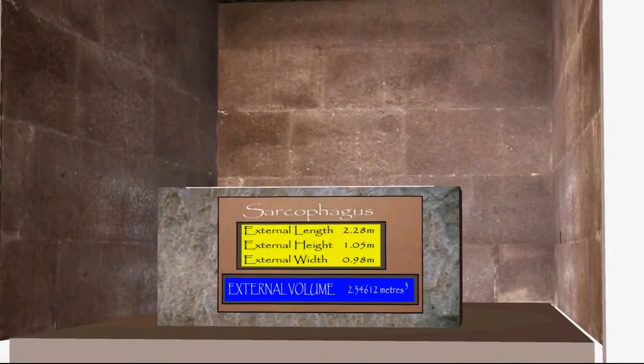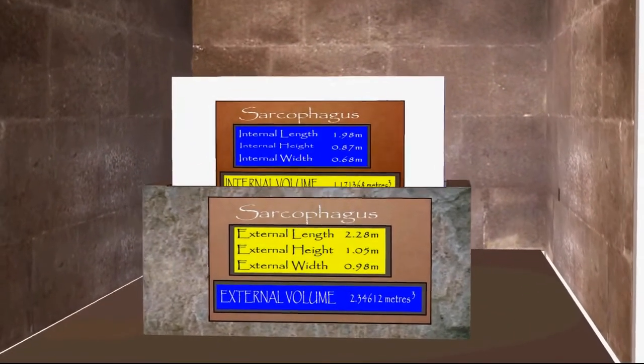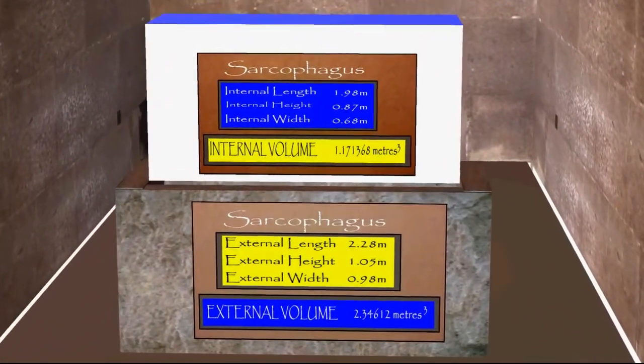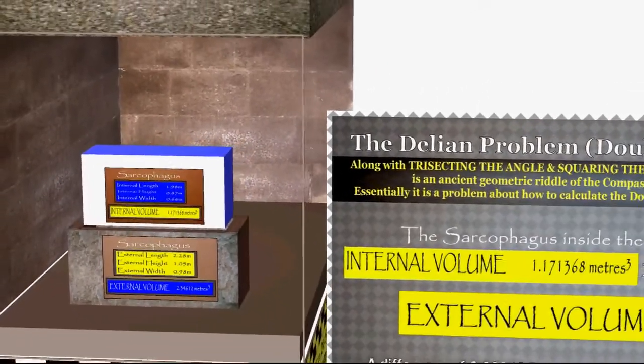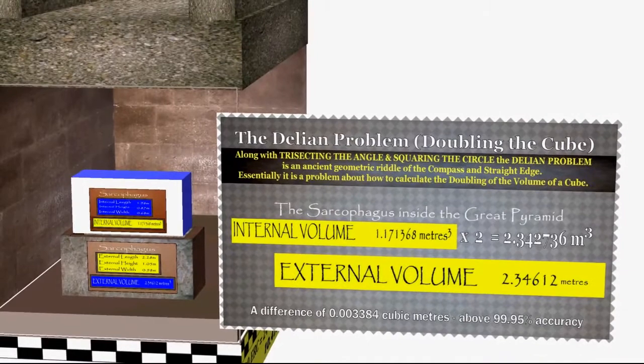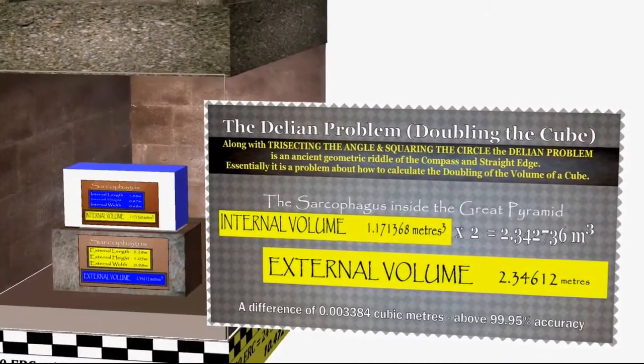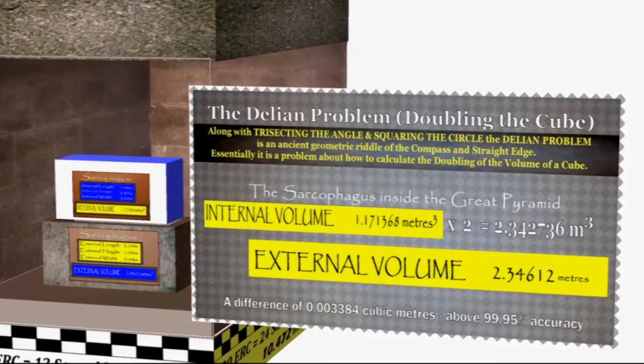We have a rectangular sarcophagus, but it doesn't have to be a cube, because the same issue is about doubling the volume. And the exterior volume of the sarcophagus is double that of the interior volume of the sarcophagus. So this, as with all the other coincidences of beautiful maths, phi, pi, metrology that's built into the Great Pyramid, is this not another example of this mathematical, geometric, astronomical, musical genius of the builders of the pyramid?